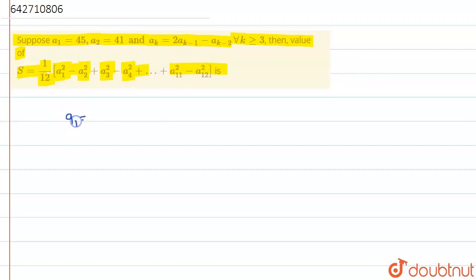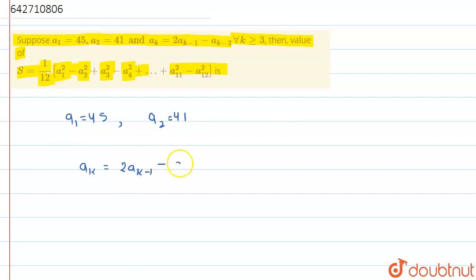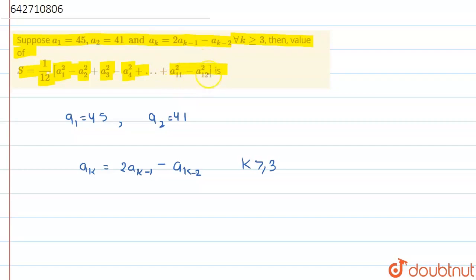So, a1 is equal to 45 (given) and a2 is equal to 41 (given), and the recurrence relation is aK = 2·aK₋₁ − aK₋₂ for K greater than or equal to 3. We have to find S = (1/12) · (a1² − a2² + a3² − a4² + ... + a11² − a12²).